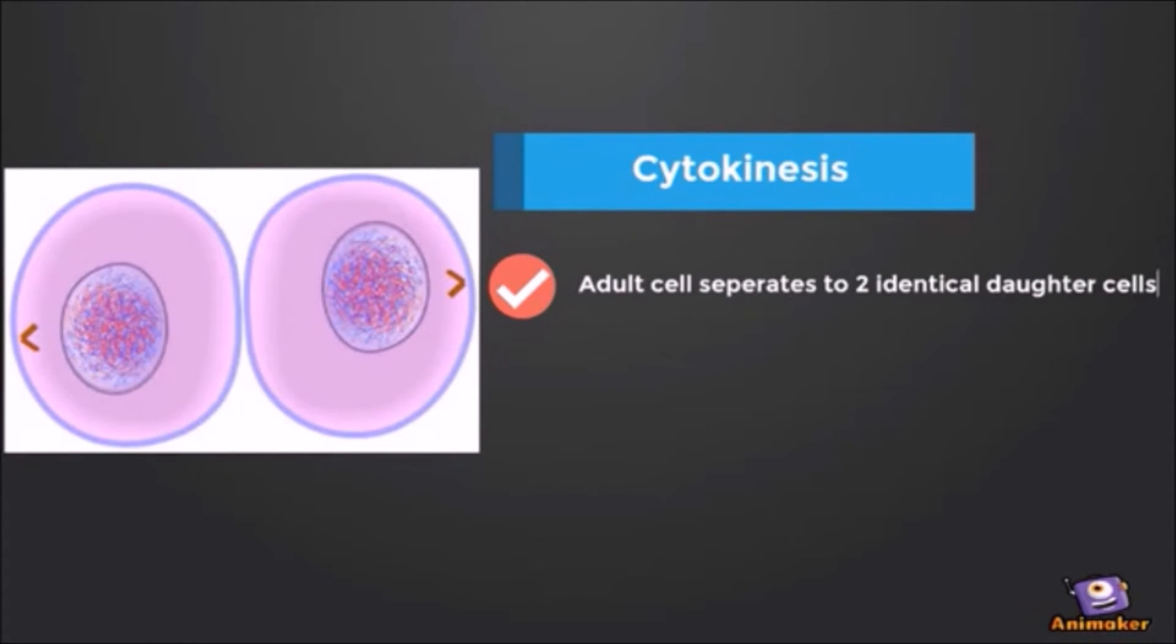Cytokinesis: the parent cell separates into two identical daughter cells, and daughter cells are clones of the parent cell.